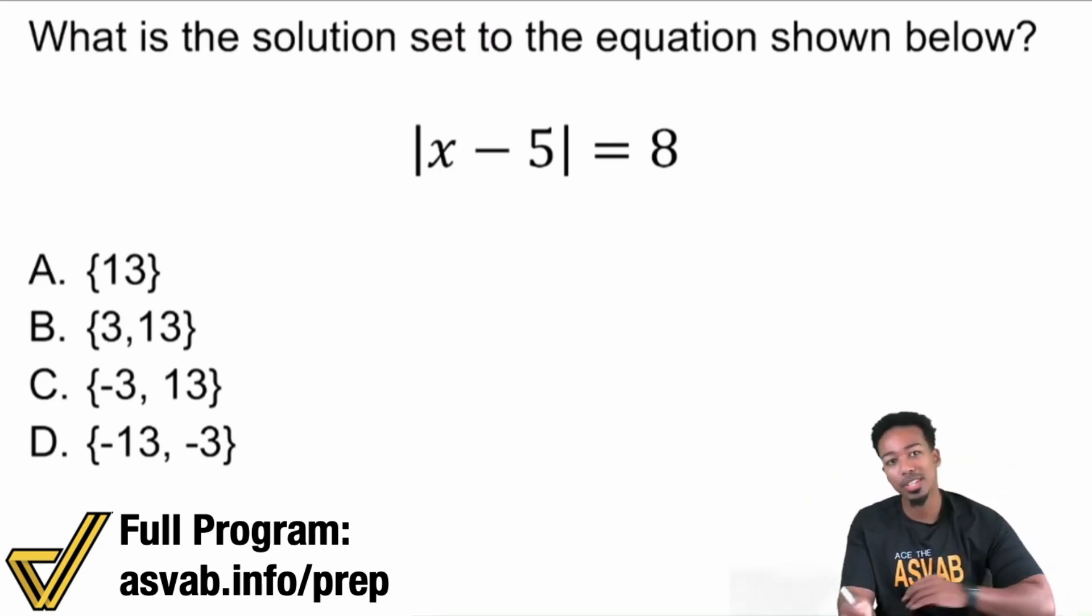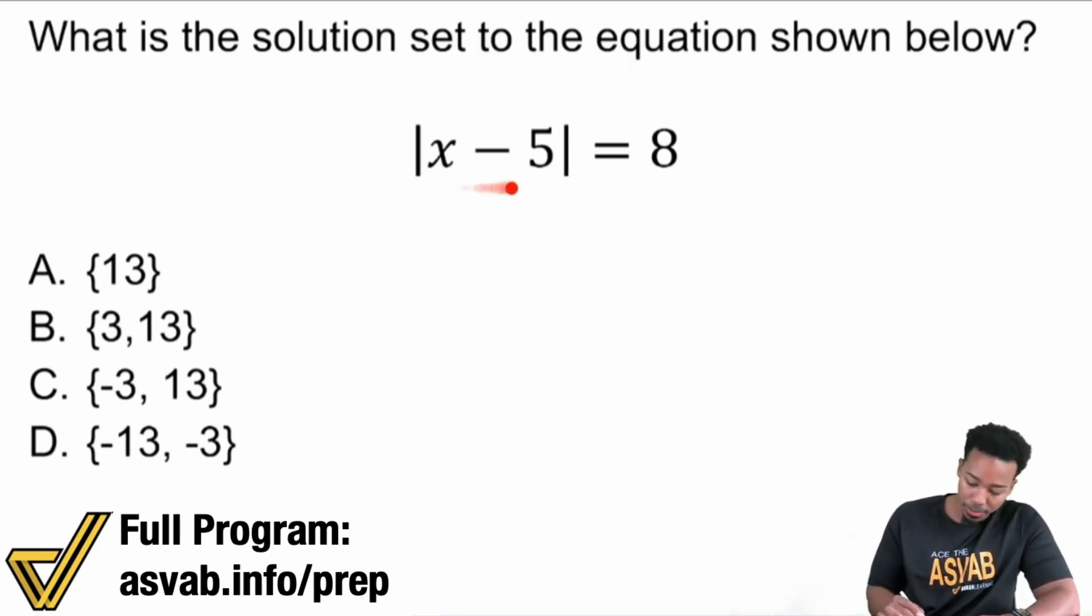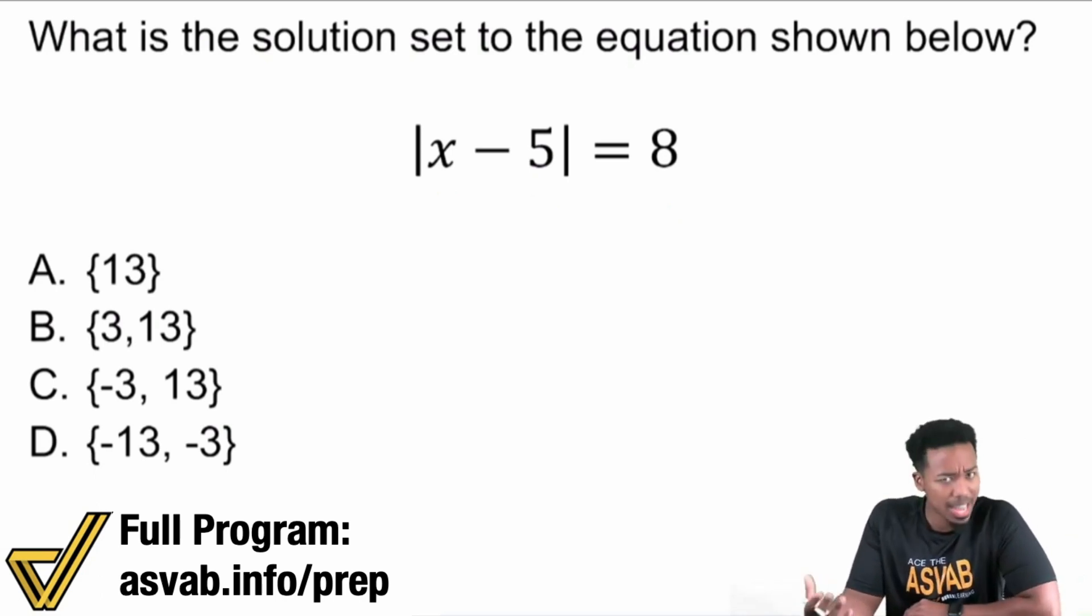So the problem reads, the absolute value of x minus 5 is equal to 8. Okay, so how do we tackle this?